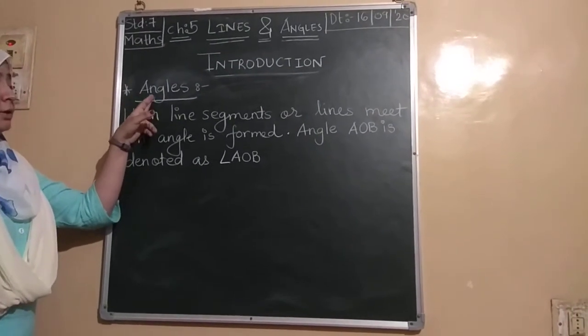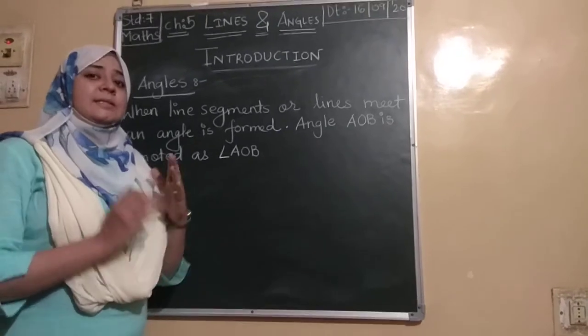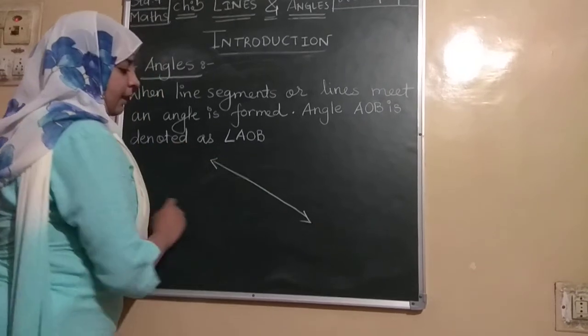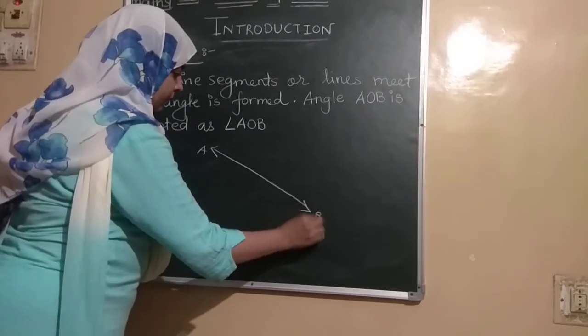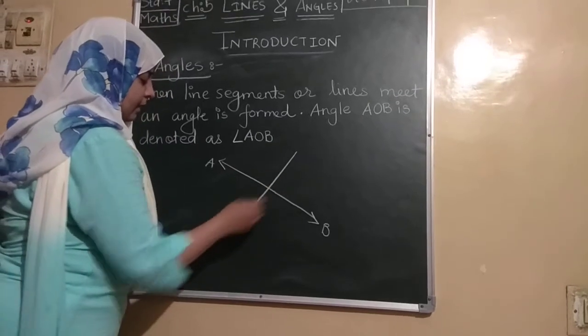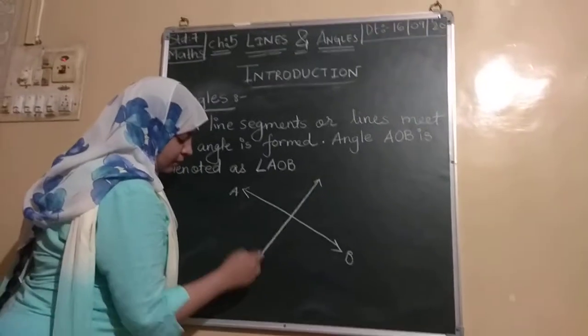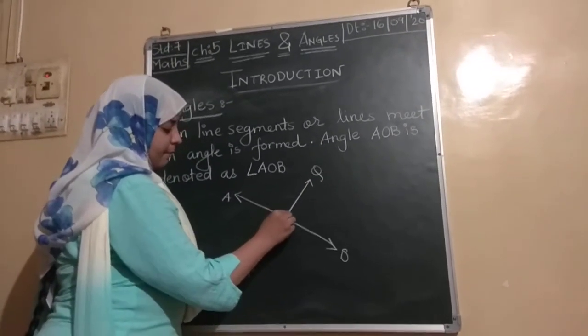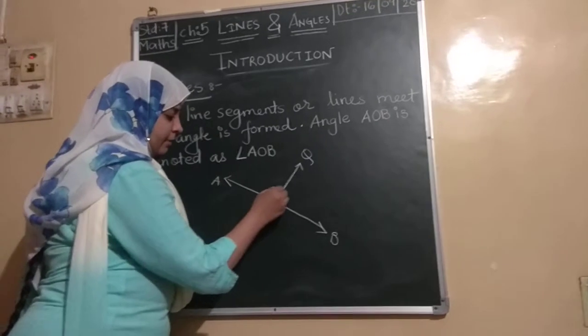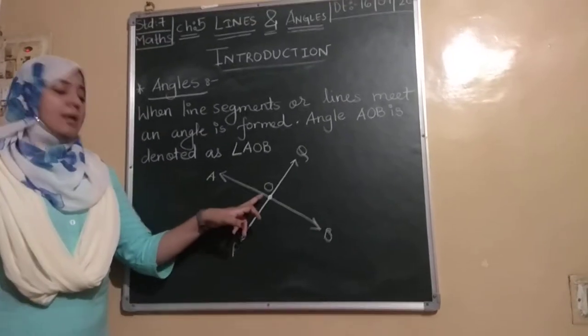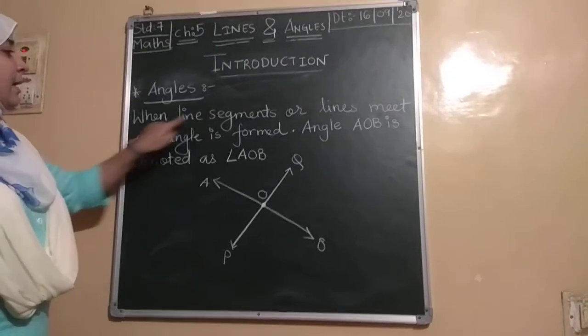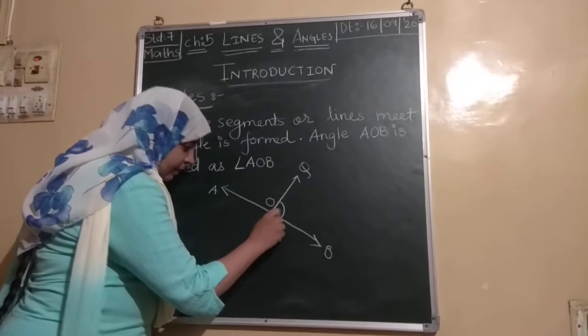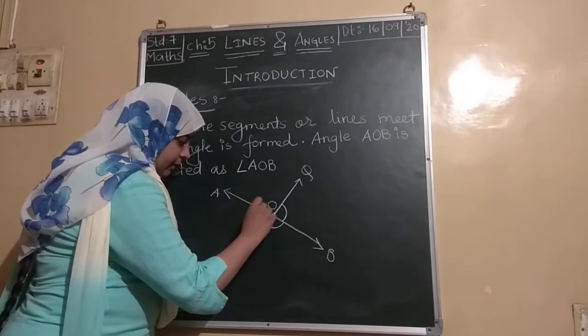Now, Angles. What are angles? When any lines or line segments meet at any one place, then here we draw. This is a line A, B. And here we draw another line. You can give it any name. P, Q. And they meet at one point. We also give that point a name alphabetically, here I am giving O. So what happens here? When line segments or lines meet, an angle is formed. This is known as angle.